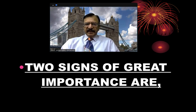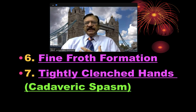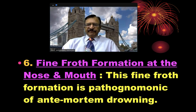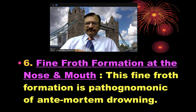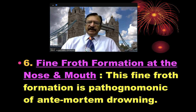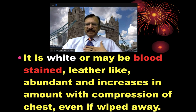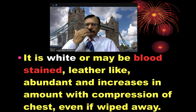The two signs of great importance are the fine froth formation and the tightly clenched hands, which is the cadaveric spasm. The fine froth formation is a pathognomonic sign of antemortem drowning. This froth is formed by mucus secreted by the irritated mucosal membrane due to water inhalation and respiratory efforts — water and mucus are churned up to form fine froth. It is white or may be bloodstained, leathery, abundant, and increases in amount with slight compression on the chest. Even if it is wiped away and slight pressure is applied to the chest, it will reappear from the nose and the mouth.